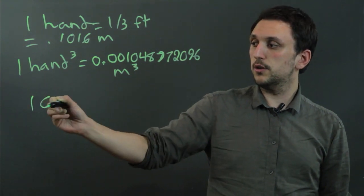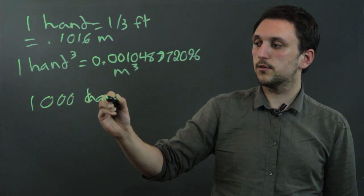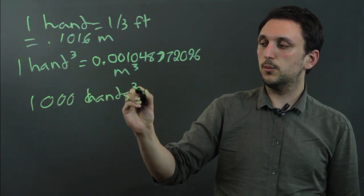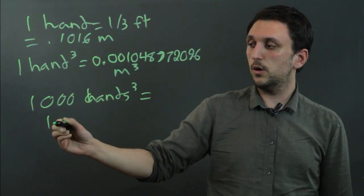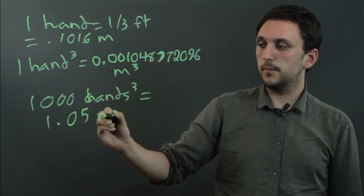So one thousand cubic hands, or rather hands cubed, equals 1.0, roughly 1.05 meters cubed.